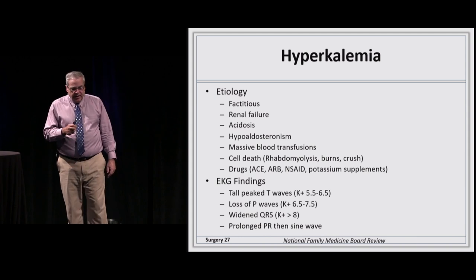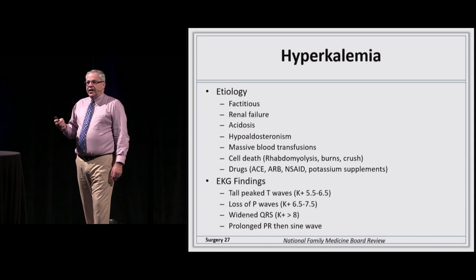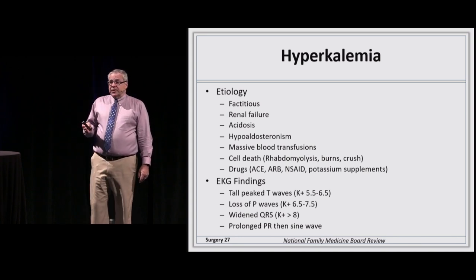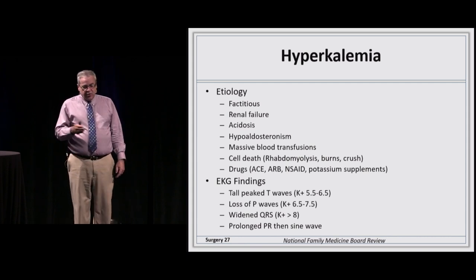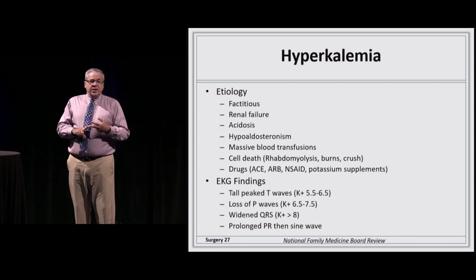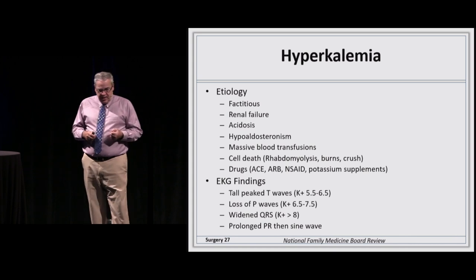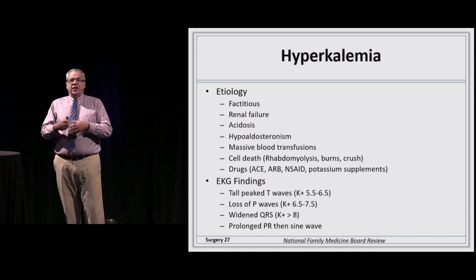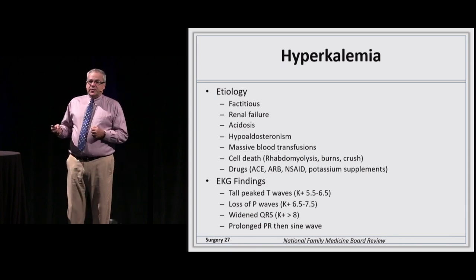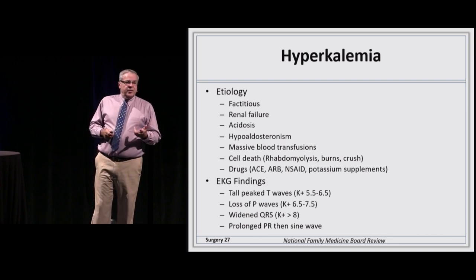For hyperkalemia with no explained etiology, first repeat the test — drawing blood can fracture red blood cells, liberating potassium and causing a factitious elevation. True causes include renal failure, acidosis, hypoaldosteronism, massive blood transfusions (red cells are fragile and potassium citrate is used as a preservative), cell lysis from rhabdomyolysis, burns or crush injuries, and drugs including potassium supplements, ACE inhibitors, angiotensin receptor blockers, and NSAIDs.